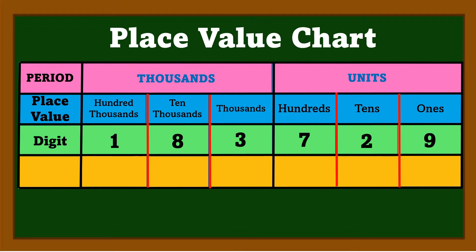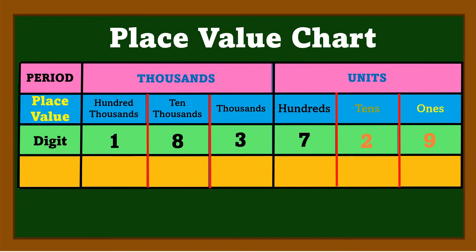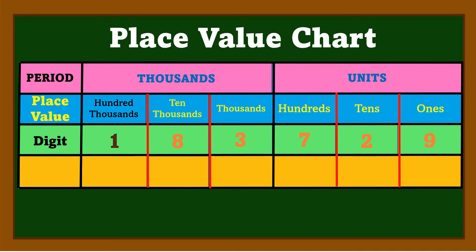We have other place values higher than hundred thousands, but we will study those when you are in grade five. Now let's identify the place value of each digit in our chart. The place value of 9 is ones, the place value of 2 is tens, the place value of 7 is hundreds, the place value of 3 is thousands, the place value of 8 is ten thousands, and the place value of 1 is hundred thousands.